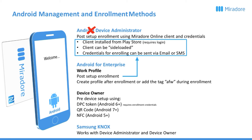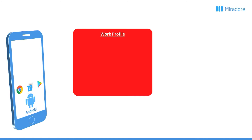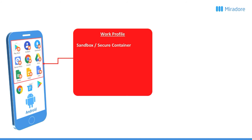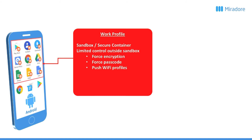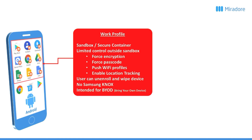Let's look at the difference between Work Profile and Device Owner mode. Work Profile means the MDM puts a sandbox or secure container on your device, and all company data is contained within this sandbox. You can control whether the user can copy-paste data from inside the container to outside. However, it provides limited control outside the sandbox — you can force encryption, enforce a passcode, push Wi-Fi profiles, and enable location tracking, but that's about it. A user can unenroll and wipe the device, and a remote wipe will only remove the Work Profile, not the entire device. It does not support Samsung Knox features, and the intended use for this is bring-your-own-device scenarios.